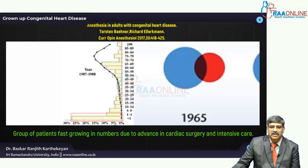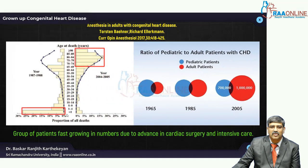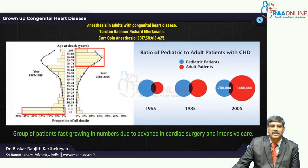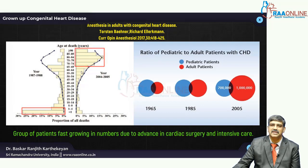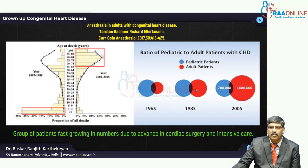Before 1990, the mortality with congenital heart disease was around 30%, so the number of people going into adulthood with congenital heart disease was very minimal. After 2000, advances in cardiac surgery and intensive care brought the mortality with congenital heart disease to less than 3%. So you can see a lot of people now in adulthood with congenital heart disease. The clinical implication is that more and more people with congenital heart disease survive into adulthood and will be coming for non-cardiac surgery.